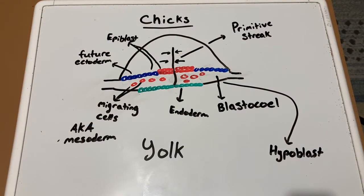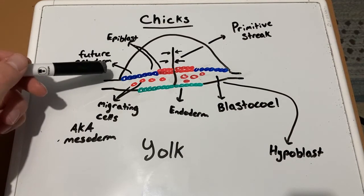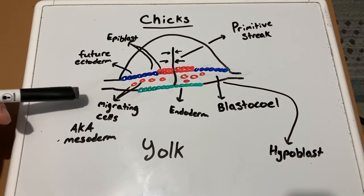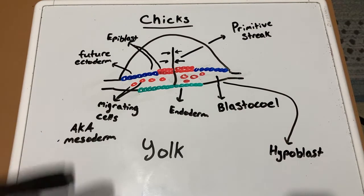All of the cells that detach and form either the ectoderm, endoderm, or mesoderm cells come from the epiblast level, whereas the hypoblast level helps with forming the primitive streak.